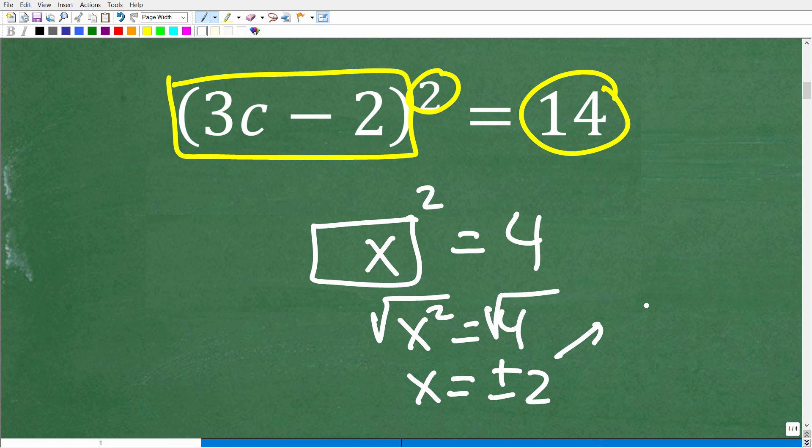My two solutions are one positive 2 and one negative 2. That's why we have this plus or minus. That's what we want to do here. We want to take the square root of both sides because we have something squared equals a number. This is the direct path.